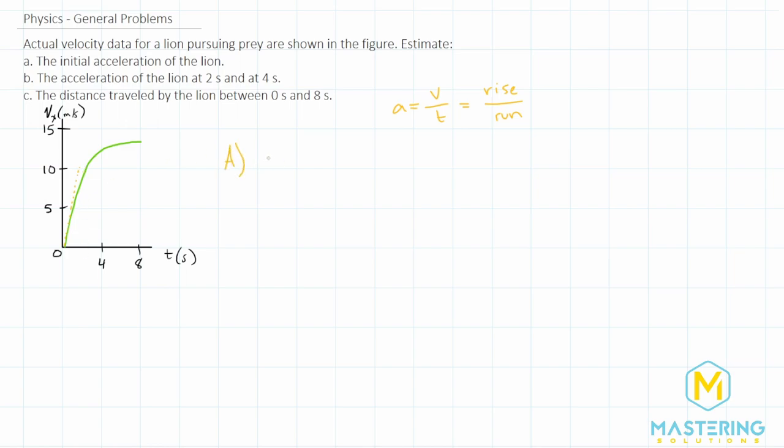So for part A, we have the acceleration: the velocity we said was 10 meters per second over the run, the time, which we said was basically two seconds. So we have meters per second divided by second or meters per second squared. So we have five meters per second squared for the initial acceleration of the lion.